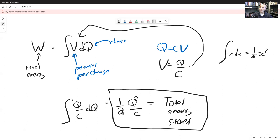This is the total energy storage as a result of pulling apart some amount of charge Q and separating it out. So that's the total energy stored inside a capacitor, Q squared over 2C.